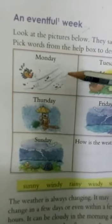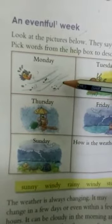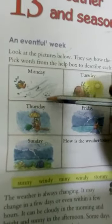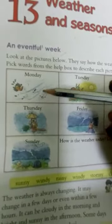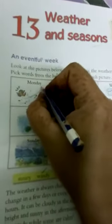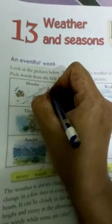The first picture is Monday. Look at the picture — what is the weather? Can you guess, children? Yes, of course — the weather is windy. Hawa chal rahi hai, so if the wind blows then that day is called a windy day. So the first one is windy — W-I-N-D-Y.